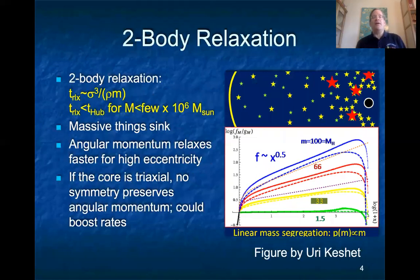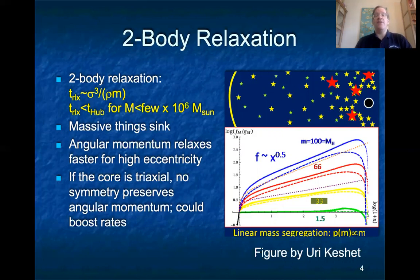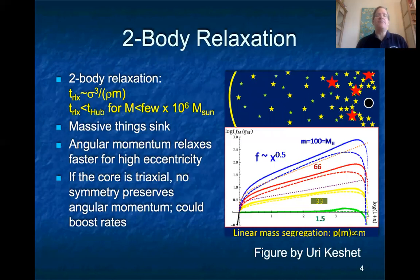Now let's talk about two particular dynamical issues: two-body relaxation and mass segregation. Studies over many decades have demonstrated that even though stars don't collide in the centers of galaxies, they interfere gravitationally — the mutual gravity at a distance of stars, black holes, or whatever, influences their orbits. This process is called two-body relaxation. The relaxation time, or energy relaxation time, is the time over which you can have a change in the semi-major axis of order the semi-major axis — halving or doubling it.